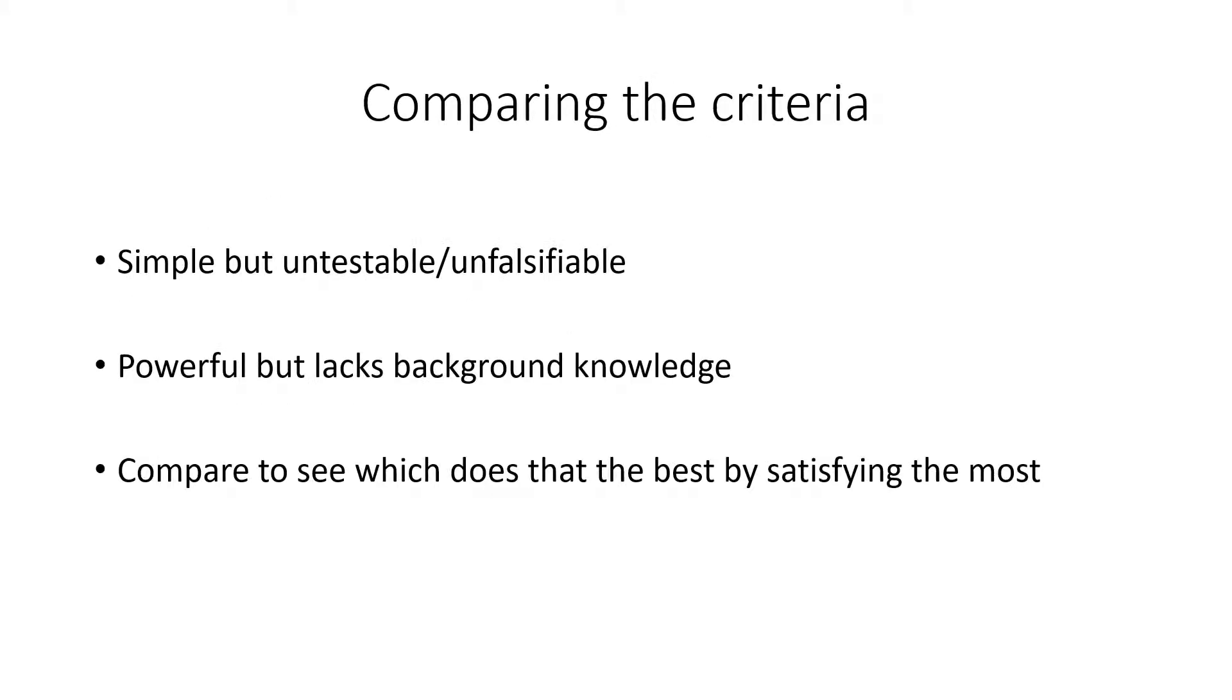So if we want to come to the best explanation, we have to compare all the criteria with one another. And this is not always so straightforward because you'll have sometimes the criteria that will conflict with one another. An example can be, you could have a simple explanation, which doesn't have many assumptions, but it might be untestable or unfalsifiable. So sometimes they can be in conflict with one another. Another way they may conflict is it might have a lot of explanatory power. It might do all the job of explaining, but it might lack background knowledge. So these things can come up. So what you want to try to do is look at all of the criteria and compare them to see which one satisfies most of the criteria.